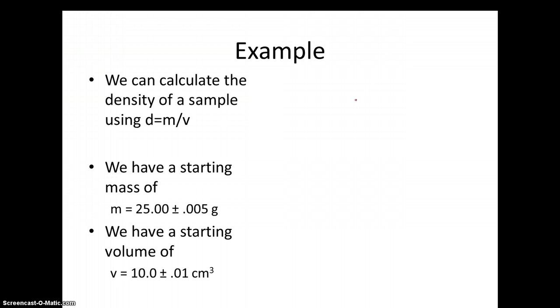For this stage, I've picked a density calculation to work with. It's a simple formula that involves division of a mass divided by a volume. We can calculate density using density equals mass over volume. We have a starting mass of 25.00 plus or minus 0.005 grams as we might get off our digital balance, and a volume of 10.0 plus or minus 0.01 cubic centimeter from a graduated cylinder.